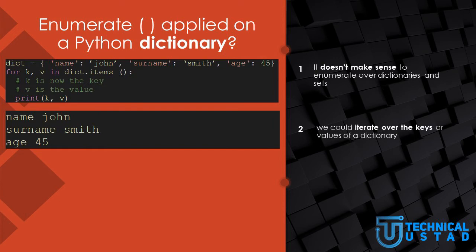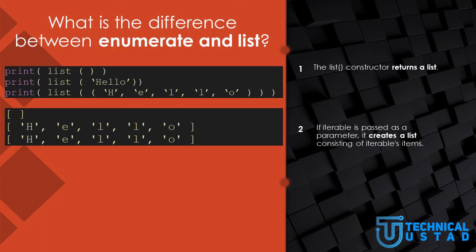What does the Enumerate function do when applied on a Python dictionary? Dictionaries and sets are not sequences — they don't have and don't need an index, so it doesn't make sense to enumerate over them. Instead, we can iterate over the keys or values of a dictionary. We declare a dictionary called dict containing name, surname, and age. A for loop iterates over the items of the dictionary, where k is the key and v is the value. The result is: name John, surname Smith, age 45. To iterate over a set, we declare a set containing A, B, C and a for loop prints its elements.